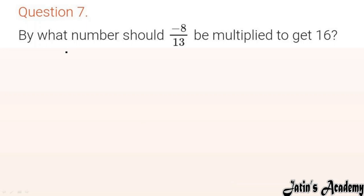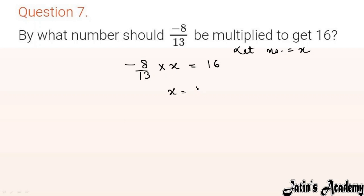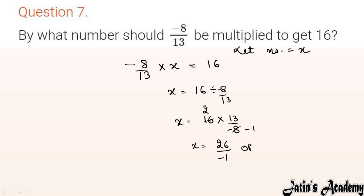Question 7: By what number should minus 8/13 be multiplied to get 16? Let the number be x. So minus 8/13 × x = 16. Move minus 8/13 to divide: x = 16 ÷ (minus 8/13). Divide converts to multiply, take reciprocal. 8 and 16 simplify: answer is 13 × 2 / minus 1 = minus 26. Write it as minus 26.